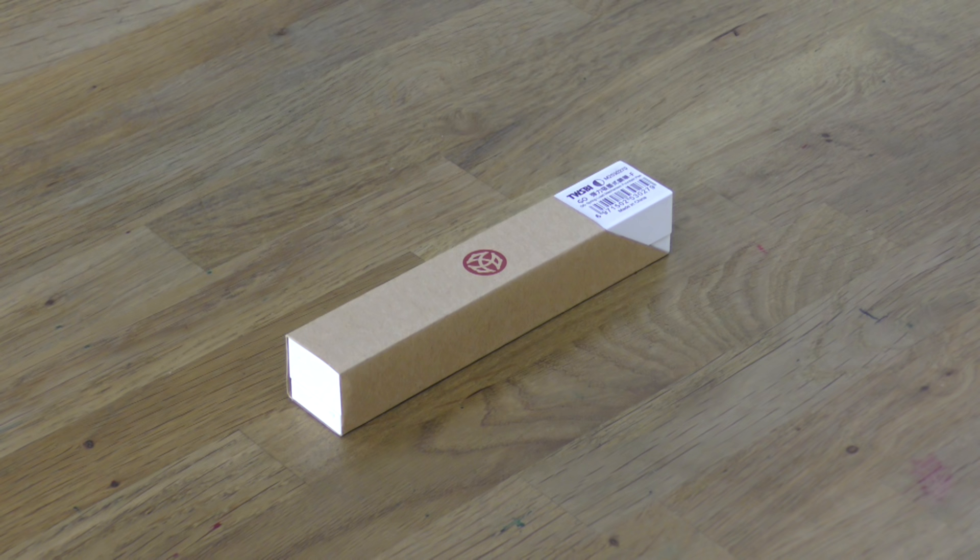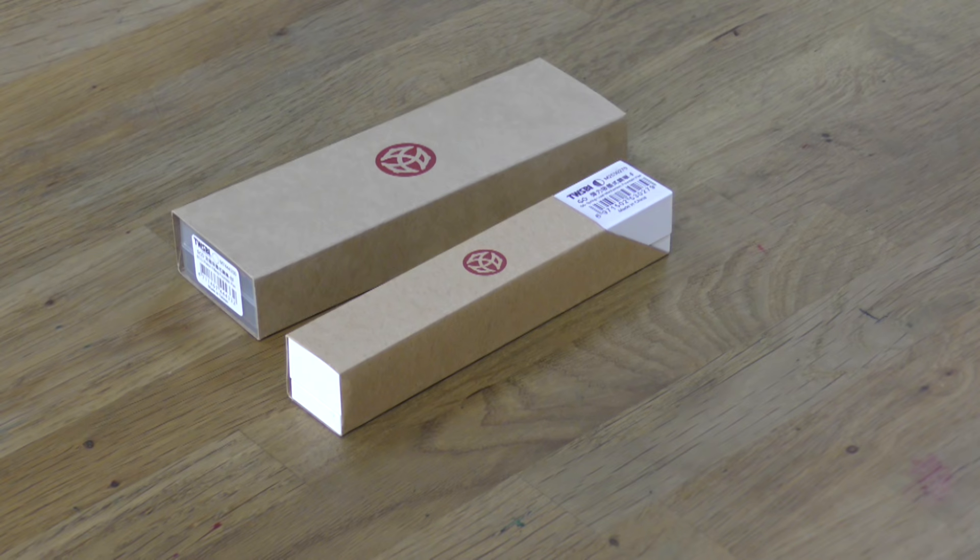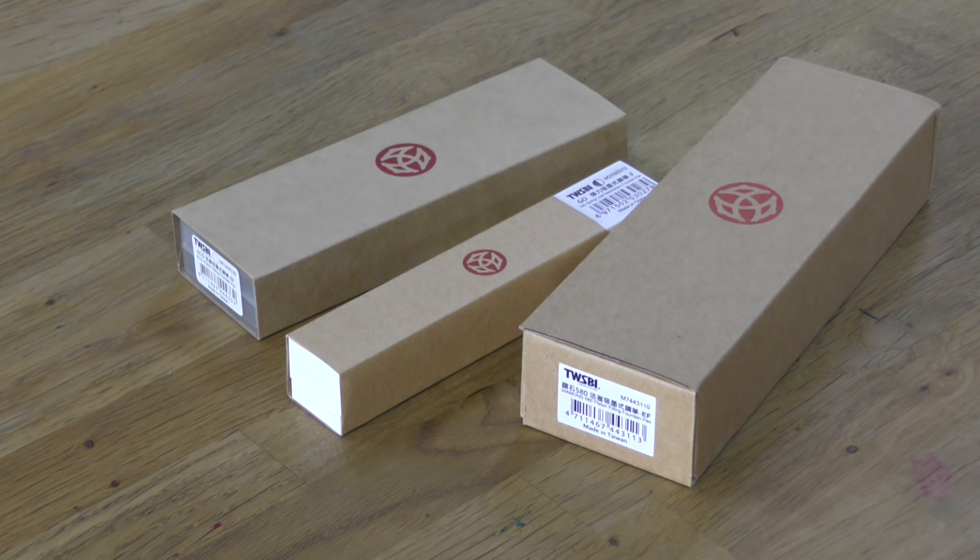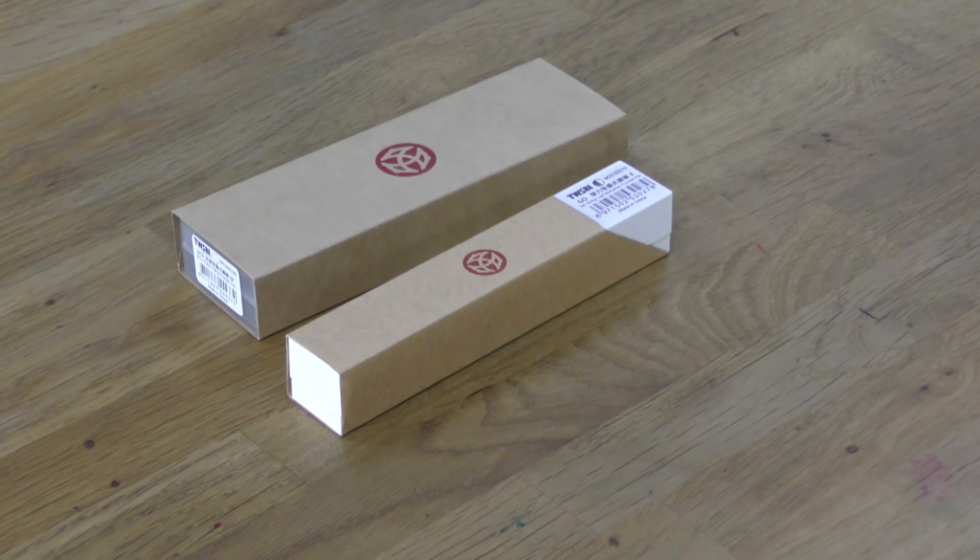So this is the gift box that the new TWSBI GO comes in. You can see it's quite a bit smaller than the other boxes that TWSBI currently use. So this is the Eco box and then this is the Diamond 580 box and VAC 700R box. You can see that they still follow the same theme, but it's quite a bit smaller in the new model.